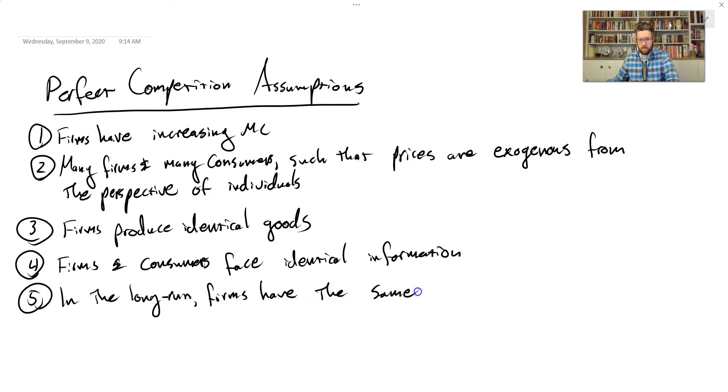In the short run, they can, and we went through some examples of how you would build up a supply curve from firms with different cost functions. But in the long run, firms are going to end up having identical technology. And to cut to the chase, it's going to be that whichever technology is the most cost effective is the only one that can survive.